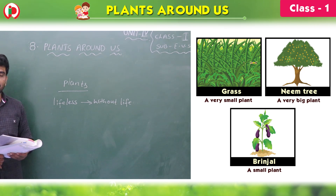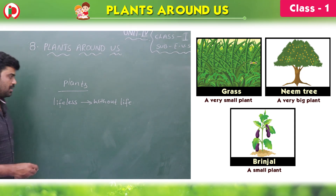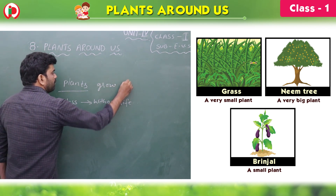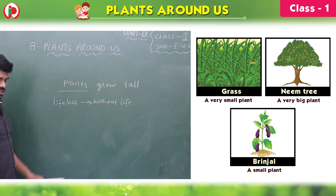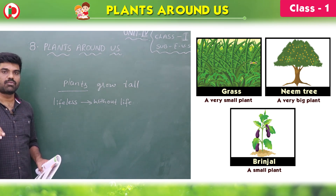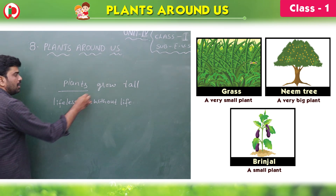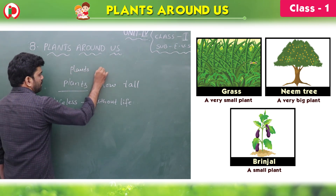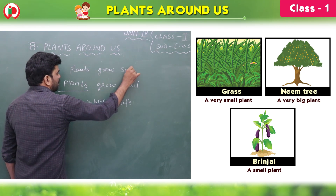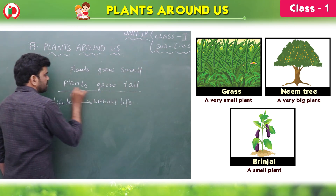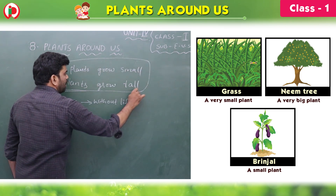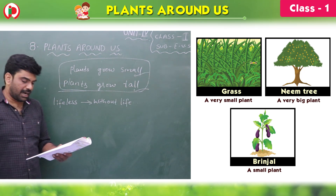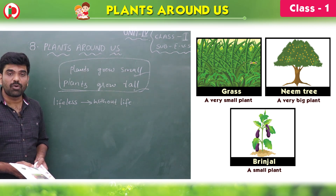Some plants grow very tall. Some plants grow short — that is small. Some grow tall and some plants grow small. Some plants are very small.